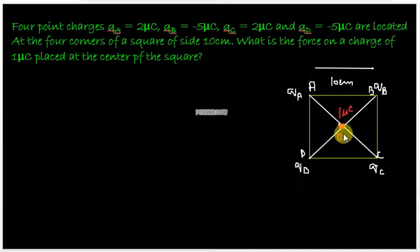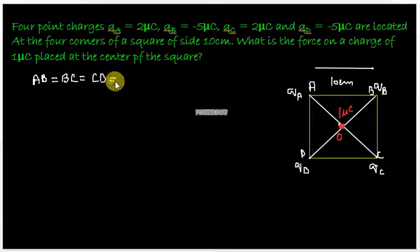O is a point at the center where the charge of 1 micro coulomb is lying. We have to find out the force on this charge. So this distance AO would be half of the diagonal AC. Now first of all we write down that AB is equal to BC is equal to CD and that is equal to DA, each side is equal to 10 centimeters.